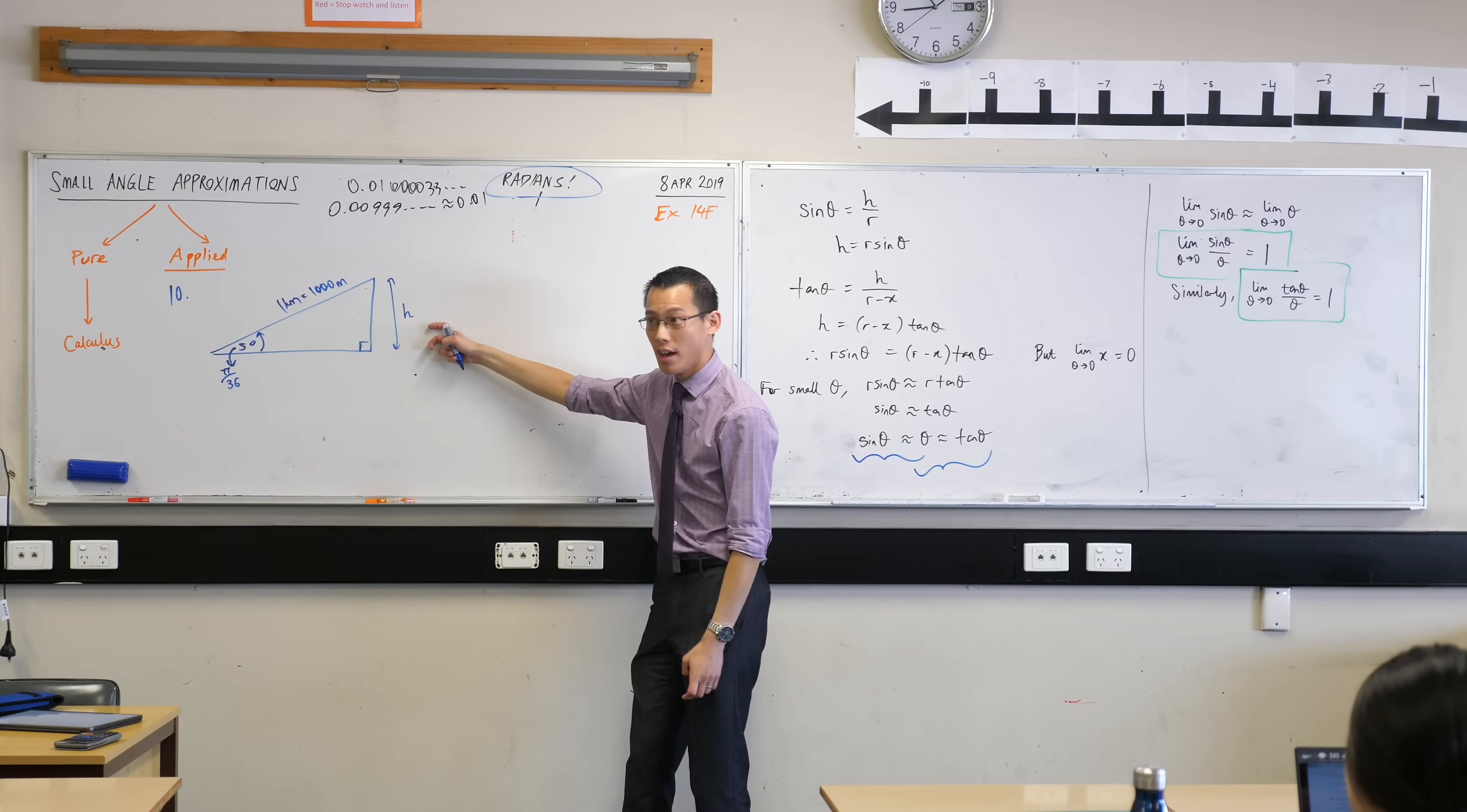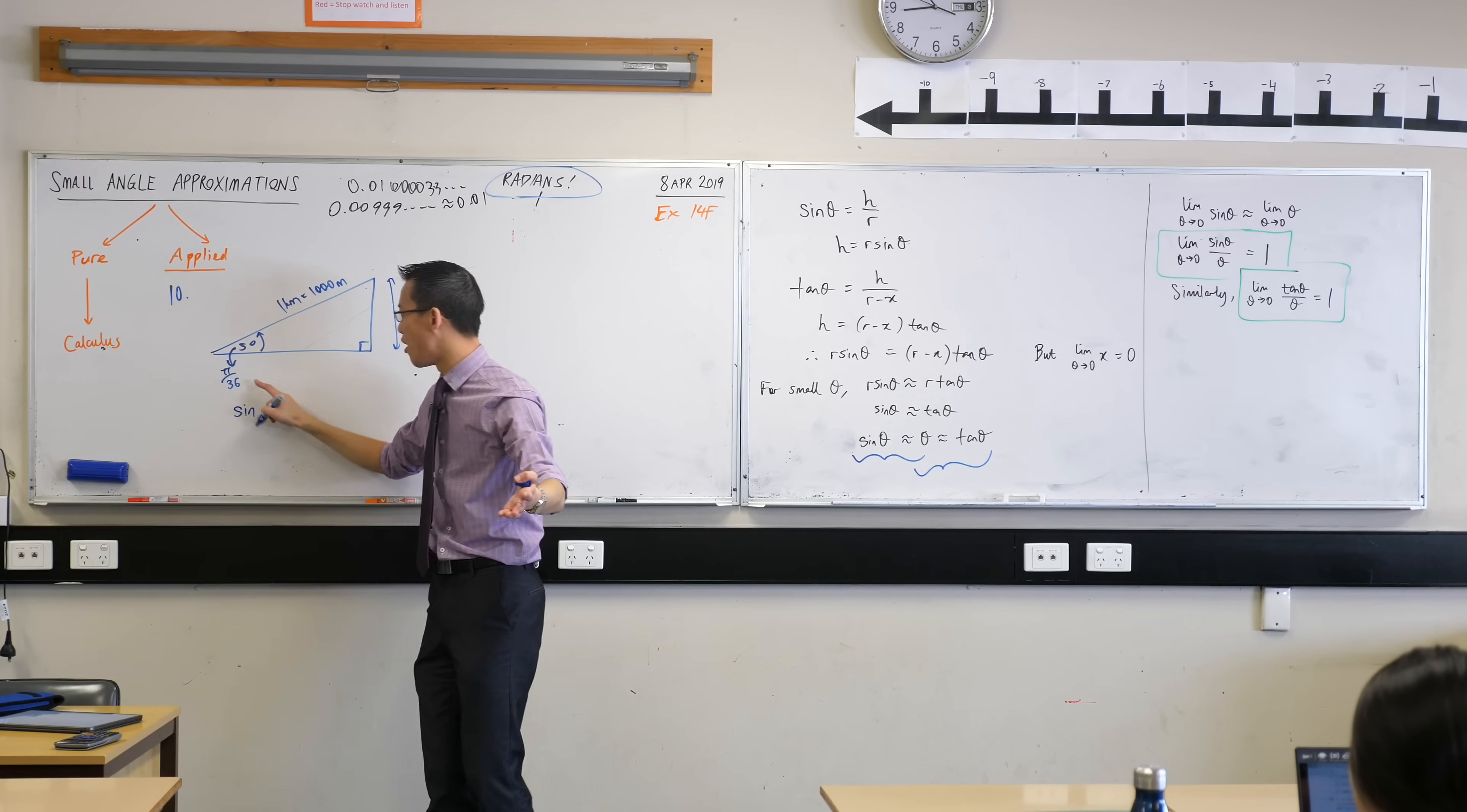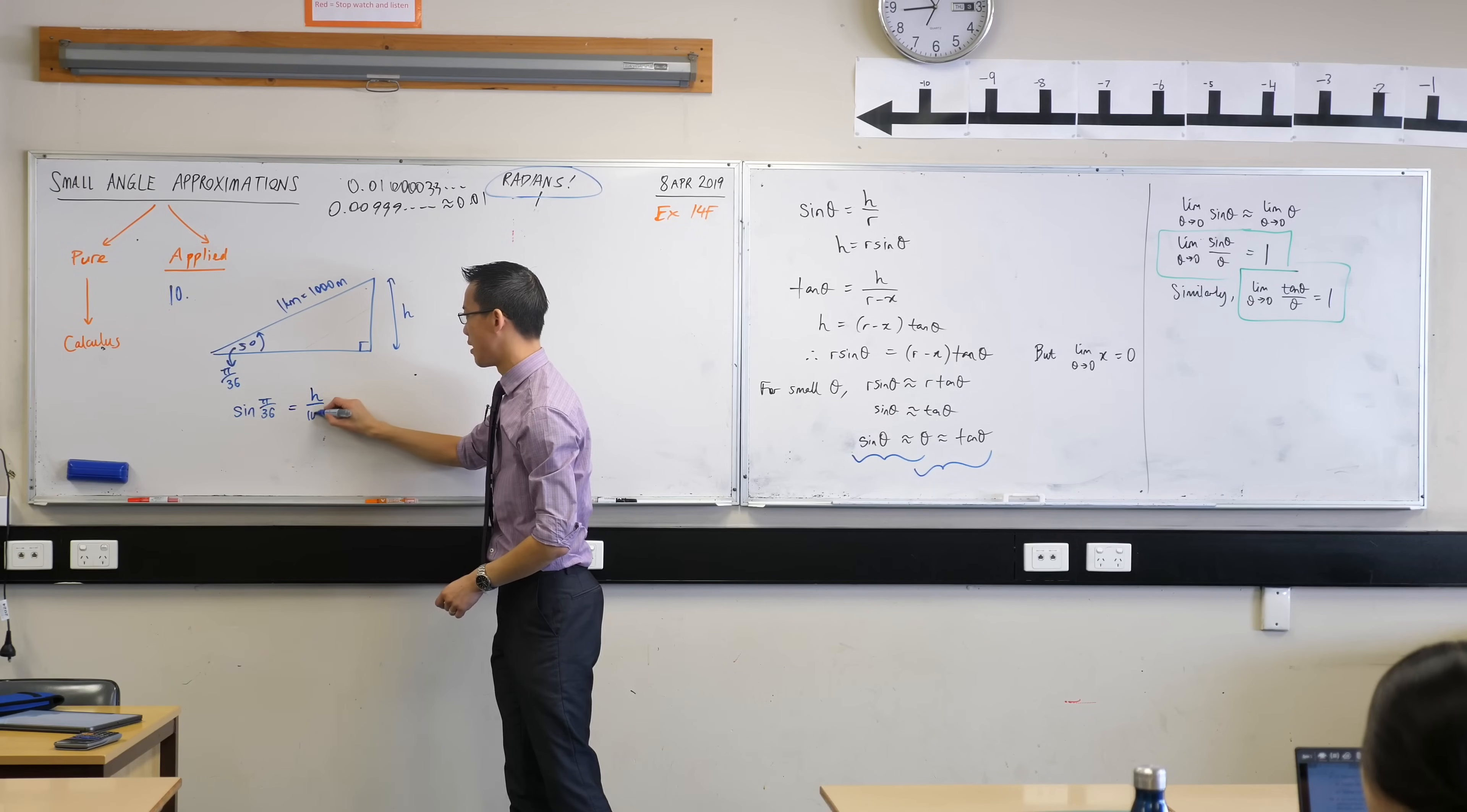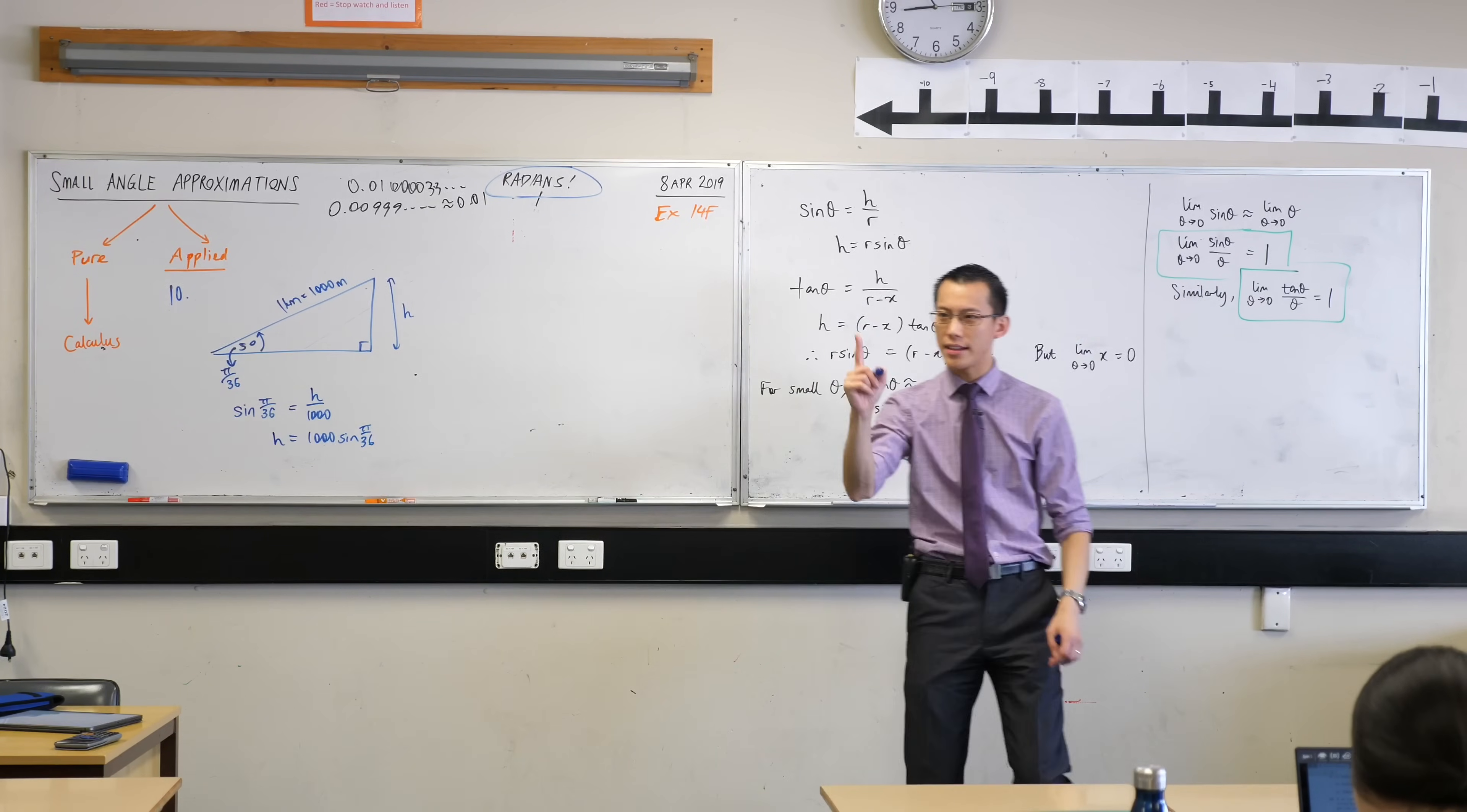So this is what I'm trying to find. So which trig ratio, I've only got two really to choose from, am I going to use which connects these? It's just like being back in year nine. Okay, so I'm going to say sine. I'm going to say sine of, there's my angle right there, pi over 36. And that is my small angle, because pi over 36 is like 0.1-ish, because pi is 3.14. That's going to be equal to opposite over hypotenuse, my H over a thousand. H is going to be exactly equal to a thousand sine pi over 36.